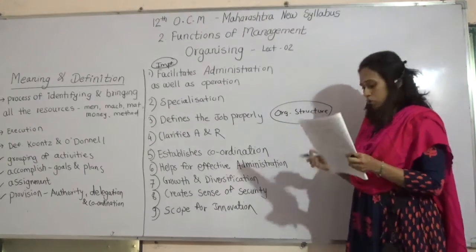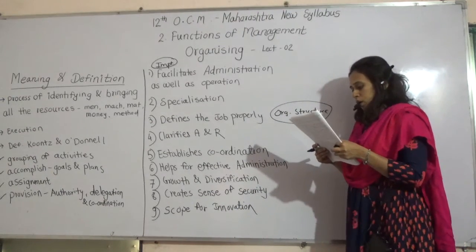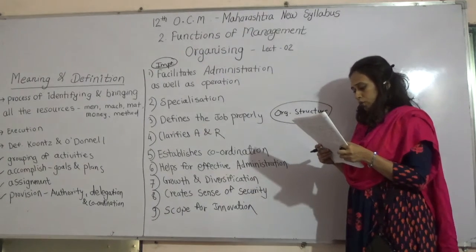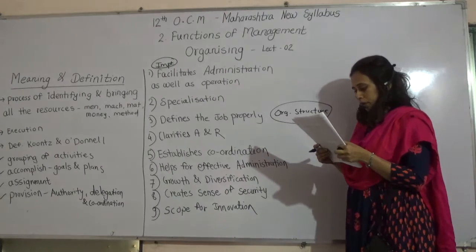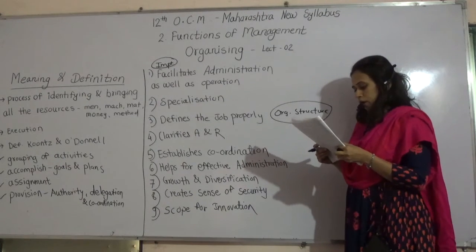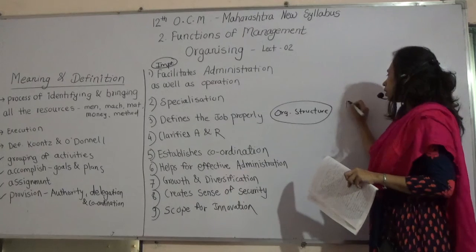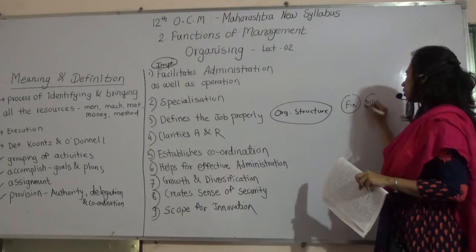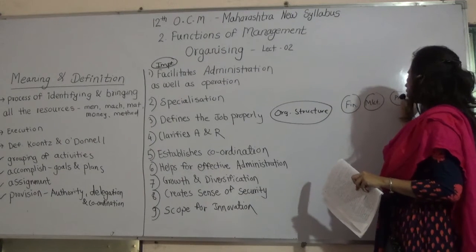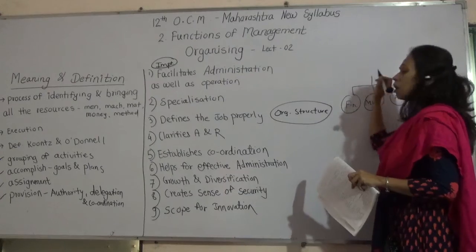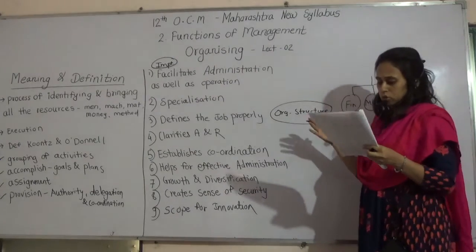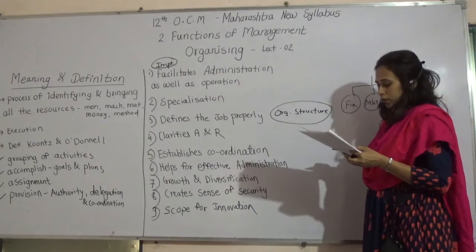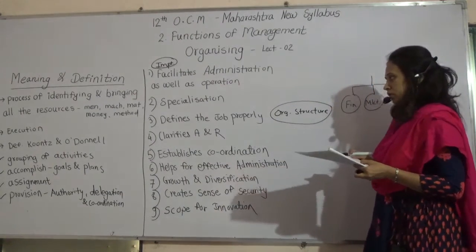In every organization, they have their organizational structure. This structure helps in putting the right man in the right role, which can be done by selecting people for various departments according to their qualifications. For example, there is a finance department, marketing department, production department — different departments each have their manager to look after them. This helps in defining the job properly, which clarifies the role of every person.